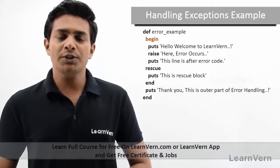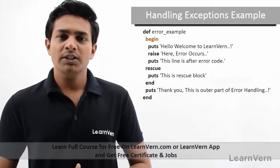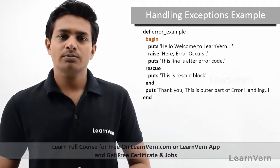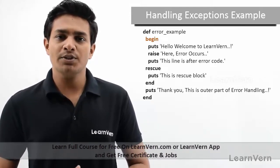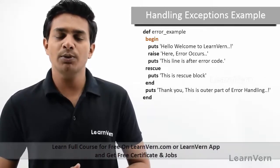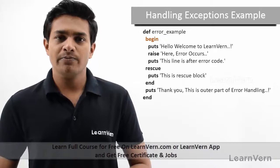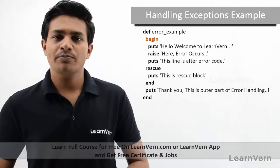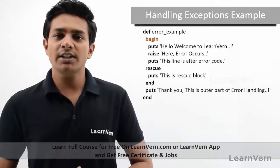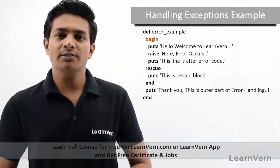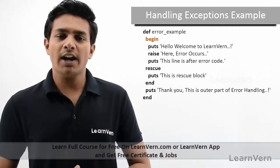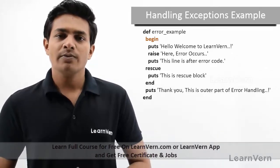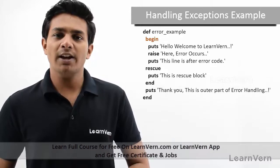After those three lines I have written a rescue block, which is the block that will handle our exception. Whenever any exception occurs between begin and rescue, it will raise an error and that error will be handled by the rescue block. The code in the rescue block gets executed when any error occurs — here I have printed a puts statement in my rescue block.